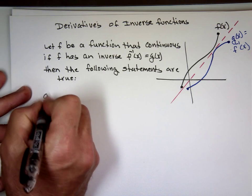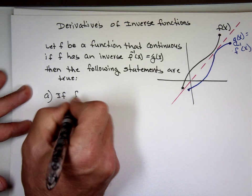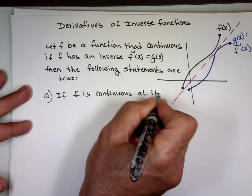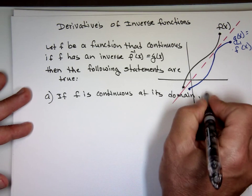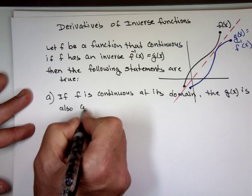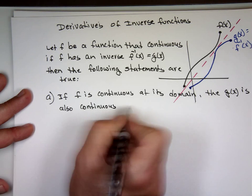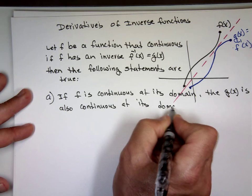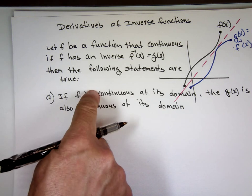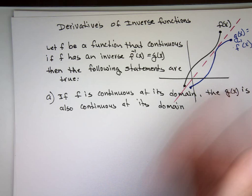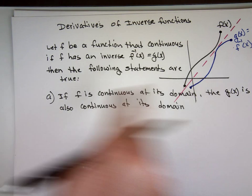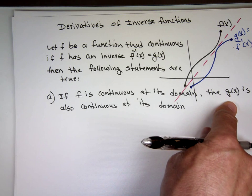First one: just by looking at it, if f is continuous at its domain, then g, which is the inverse function, is also continuous at its domain. Now remember from inverse functions, I didn't say the same domain. Because the domain of f becomes the range of g, and the range of f becomes the domain. So the x value for the function becomes the y value for the inverse, and the y values for this become the x values for that one.